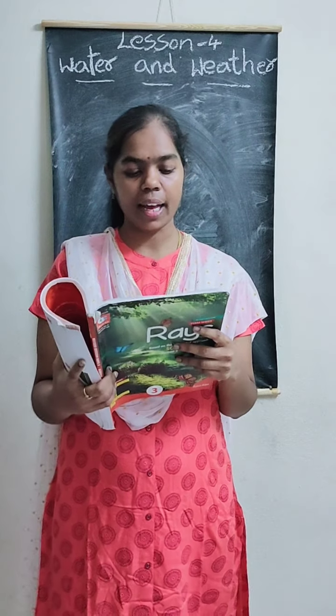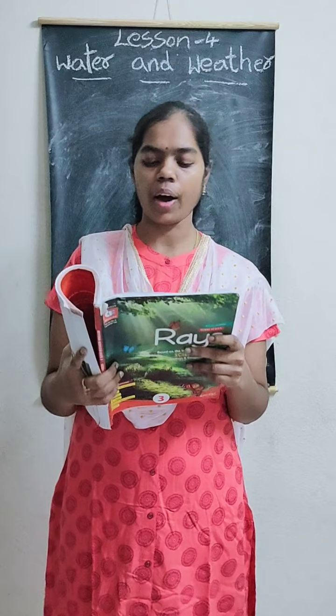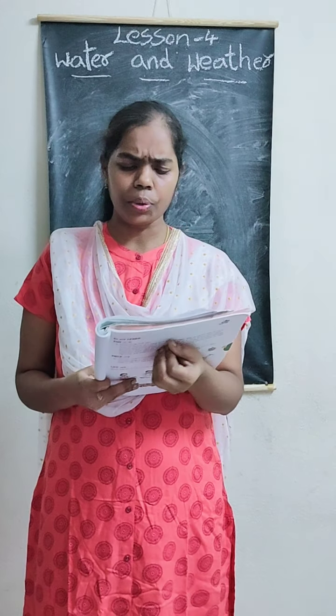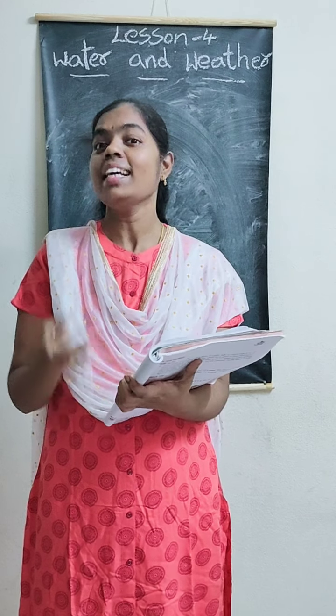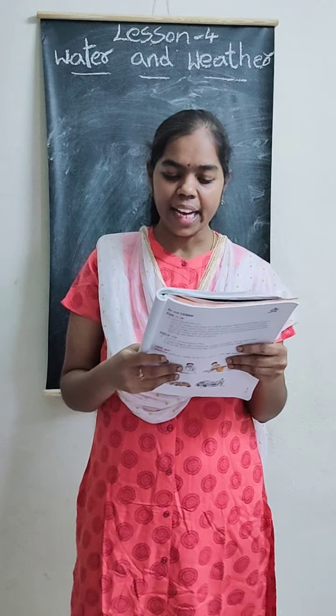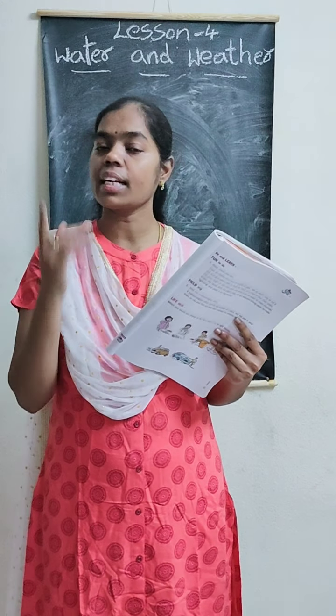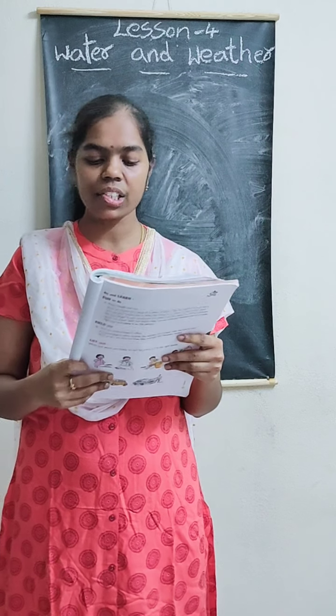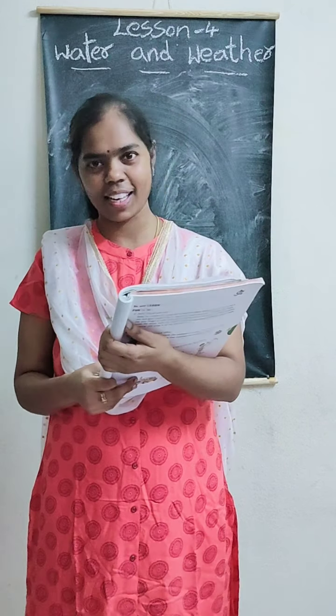Let us see fill in the blanks. Number 1: dash time is the hottest part of the day — the answer is noon time. Number 2: in winter, we like the warmth of the — the answer is sun. Number 3: too much rain can cause — the answer is floods. Number 4: dash is experienced due to lack of rain — the answer is drought. Number 5: accidents can occur on a dash day — the answer is foggy day.